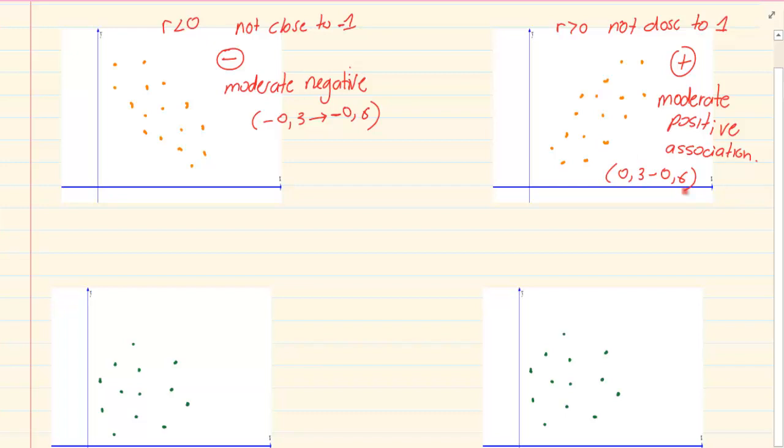And then if we have one that lies between let's say the negative 0.2 to just before the 0, or we can say from 0.2 to the 0, then we're going to call this one a weak association. Now if R is equal to 0, like they're so random, there's no really, you can't decide what it is, then this is called no association.